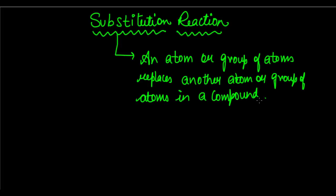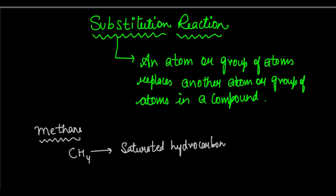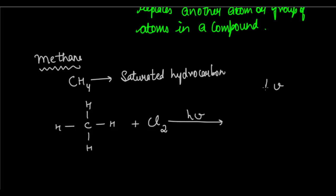Let's have a look at substitution reaction with a clear example. This usually takes place in saturated hydrocarbons. Let's take methane, CH4, as an example — a saturated hydrocarbon with all strong single sigma bonds. If this reacts with Cl2 in the presence of sunlight (hν), please remember hν represents sunlight.